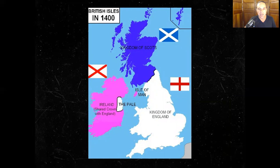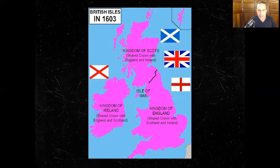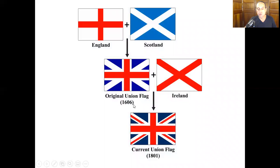Up until this point the Scots were very much independent. Ireland was owned by England by the 1400s, for the most part. But in 1603, with the coronation of James I, Scotland and England and Ireland are united. This is when we see the Union flag — the Union flag many of us recognize today. This was the original Union flag, 1606. It will not include Ireland until 1801.